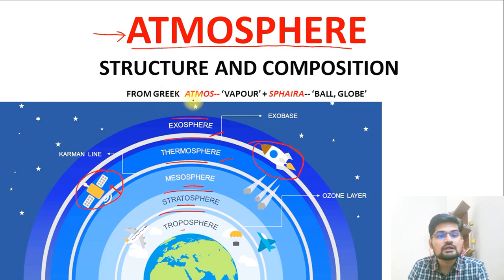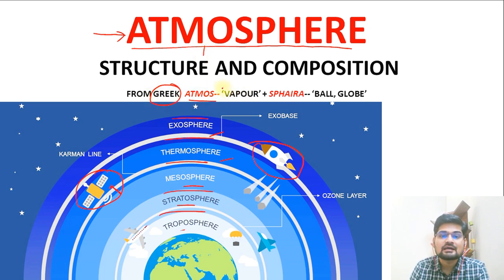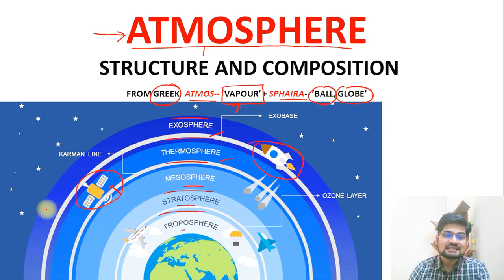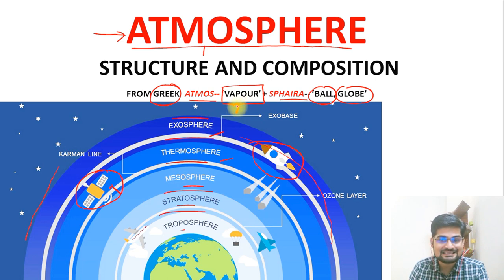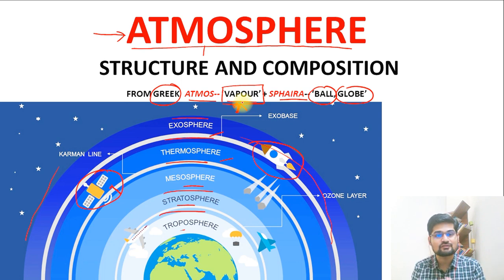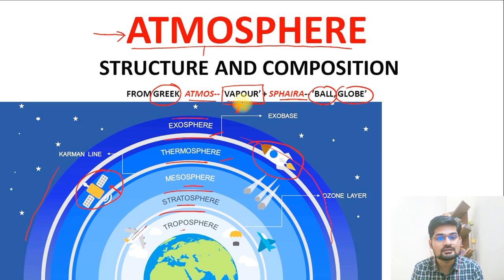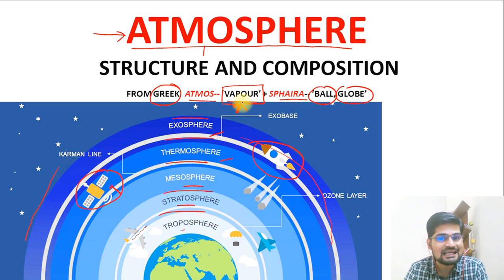Beginning from the first word itself: 'atmos'. The Greek origin of 'atmos' basically means vapor — it means a gaseous state. And 'sphaira' is basically a ball or a globe. So what we see is this is an envelope in which there is global coverage through the gaseous state of matter, that is the vapor state. So atmosphere is basically an entire global ball or sphere that envelops the entire Earth, with the major component being gases or vapor.